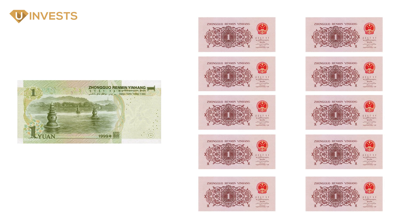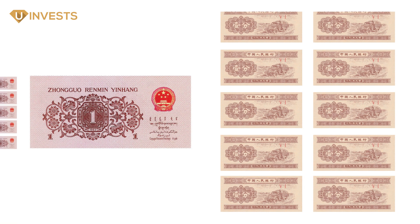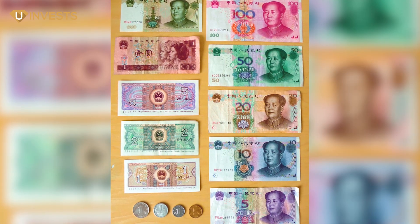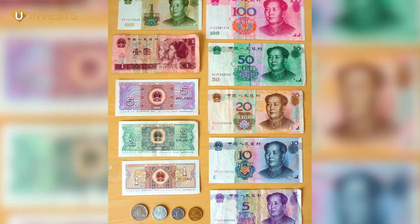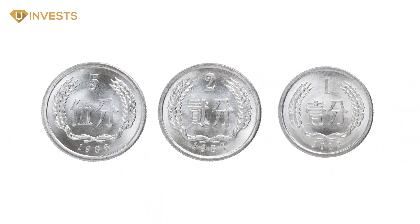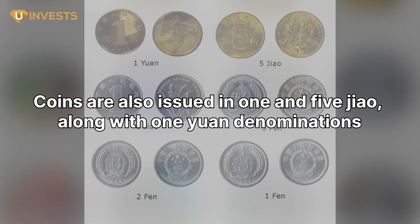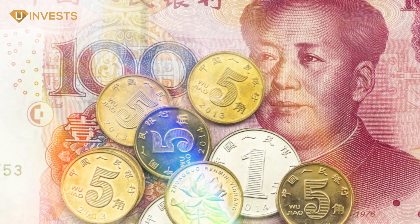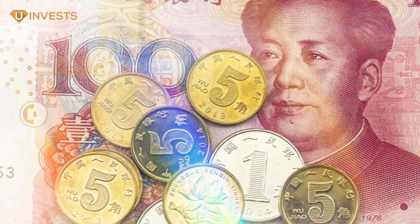A single yuan is divided into ten jiao; one jiao is further divided into ten fen. Banknotes in circulation come in one, two, five, ten, twenty, fifty, and one hundred yuan denominations, as well as one, two, and five jiao notes. The central bank also mints coins in one, two, and five fen; coins are also issued in one and five jiao along with one yuan denominations.